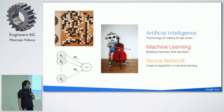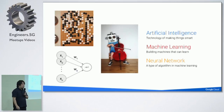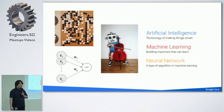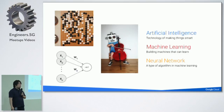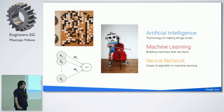One of the machine learning algorithms is the neural network, which saw a boom or breakthrough around 2012. That's the reason why Google has been spending so many resources and costs on developing neural network technology.